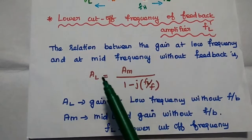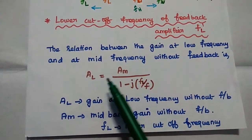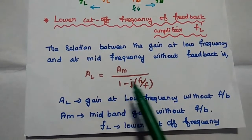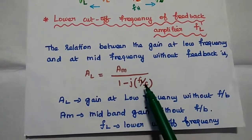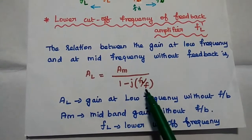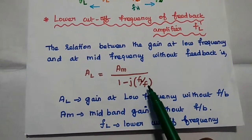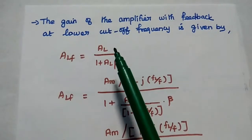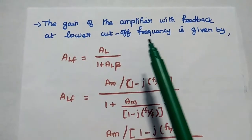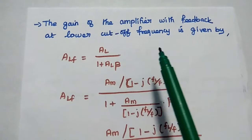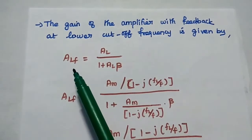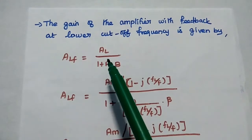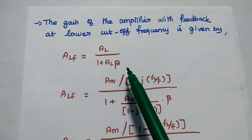AL represents the gain at low frequency without feedback, and FEL is the lower cutoff frequency without feedback. In this low-cutoff-frequency gain expression, the ratio is FEL/F, where F is the operating frequency of the amplifier. Next, we find the gain of the amplifier with feedback at the lower cutoff frequency, represented as ALF = AL / (1 + AL·β).